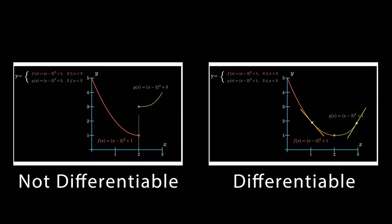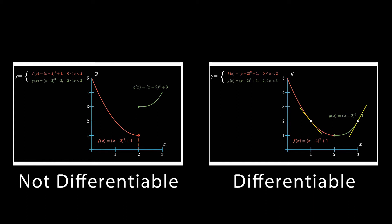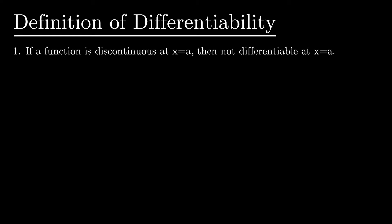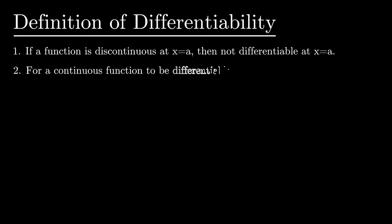What does it mean? Differentiability. The definition — we're interested in our first two points here. If a function is discontinuous at x equals a, then it is not differentiable at this point. So for a function to be differentiable, it must be continuous. That's our first thing.